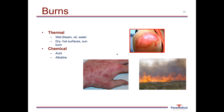Electrical burns can occur from electricity, and friction burns can result from road rash such as falling off a bicycle. Inhalation burns are usually a result of being caught in house fires or bush fires, where someone breathes in superheated gases and smoke that can burn the delicate airways inside the nose, mouth, and lungs.